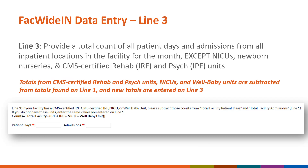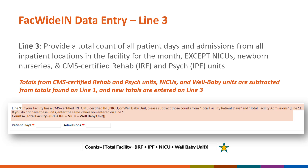Line 3 is also a subset of line 1 and represents the total number of patient days and admissions from all active inpatient units with the exception of CMS certified IRF and IPF units as well as NICU and well baby units and nurseries. These unit types are to be subtracted from the total patient days and admissions entered on line 1, and the new totals entered on line 3. The formula to help calculate the number of patient days and admissions for line 3 is shown on the slide and is available on the denominator form.